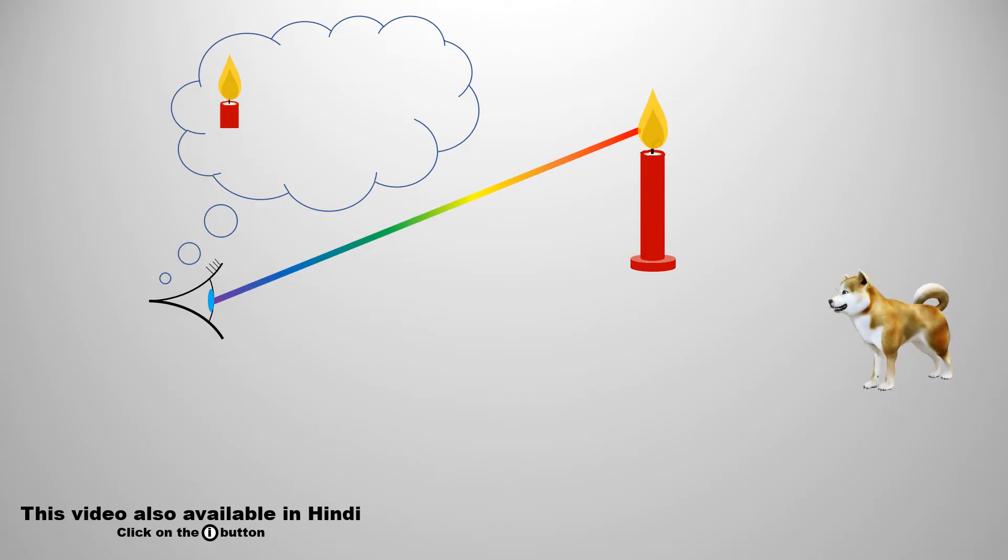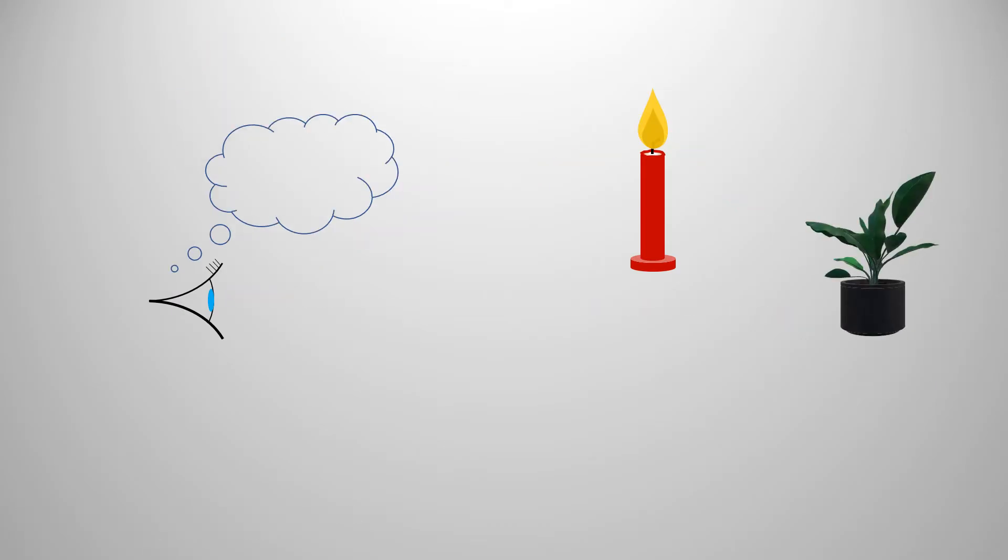Or the light is hitting an object and coming back to our eyes. In both conditions, the object is visible to us only when the light comes back to our eyes. If the light does not come back to the eye after hitting an object, then that object is invisible or black to us. Black is not a color, but black appears in the absence of light.